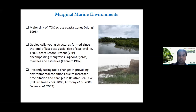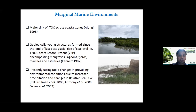When we focus on coastal oceans and marginal marine environments, these are very young structures, formed since the end of the post-glacial rise of sea level, around 12,000 years ago. Mangroves are one type of these young structures. Many of these structures are not only a major sink of total organic carbon, as we heard in yesterday's lecture, but they are also facing rapid changes because of anthropogenic climate change and changes in relative sea level. The effect of the Anthropocene on the functional guilds of benthic communities needs to be understood.